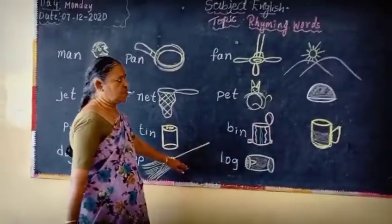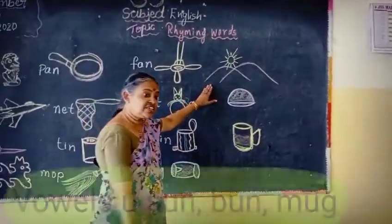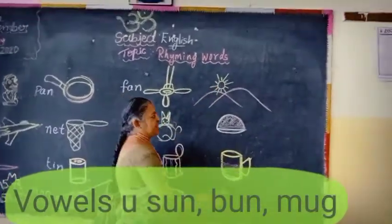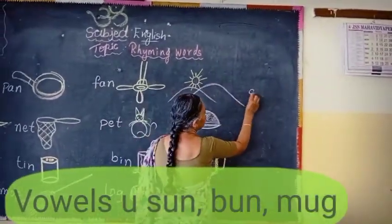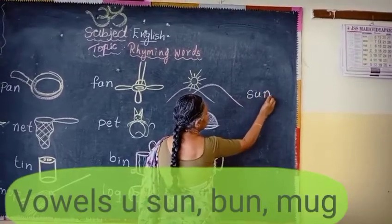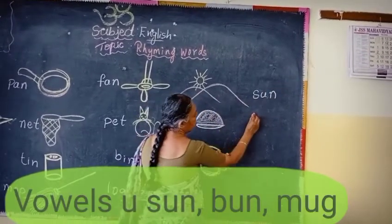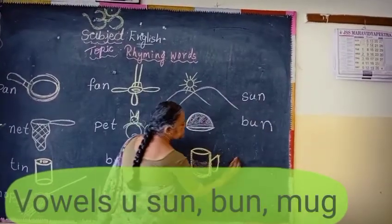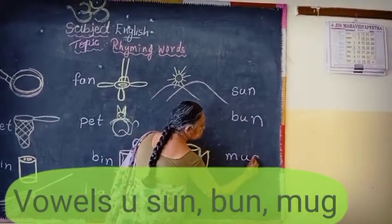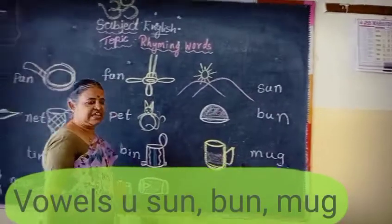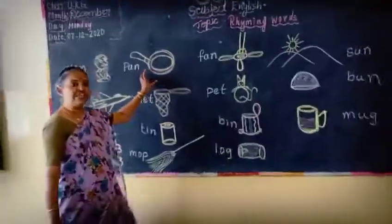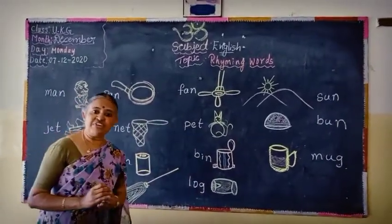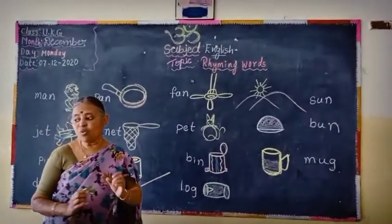This is the O sound. Then which is the last sound, children? That is U. What is this? Sun. You have to know the spelling of sun, children: S-U-N, sun. B-U-N, bun. Next: M-U-G, mug. This is all the vowel letters, children — these are rhyming words with same vowel sounds.